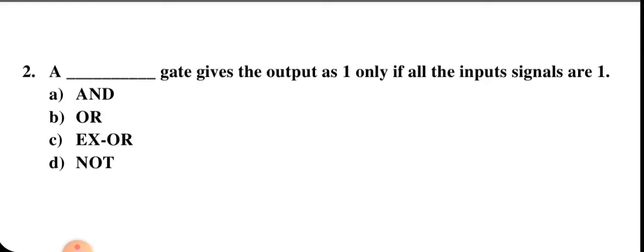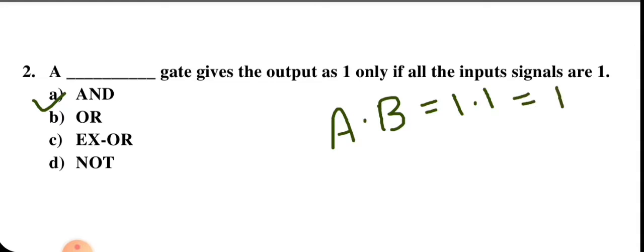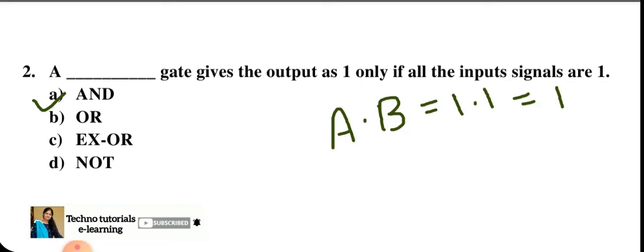A blank gate gives output as 1 only if all input signals are 1. The AND gate is correct because output of AND gate is given by A·B. If both inputs are 1, the product is 1. If either input B is 0, the output will be 0. So the AND gate is the correct option.